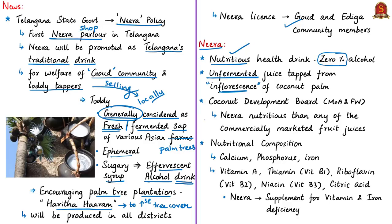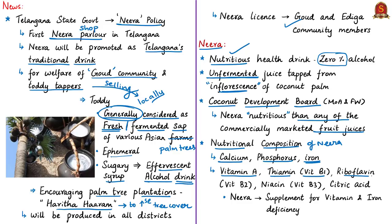According to the Coconut Development Board under the Ministry of Agriculture and Farmers Welfare, Neera is more nutritious than any of the commercially marketed fruit juices in India. It is a good source of minerals like calcium, phosphorus and iron, and is also vitamin-rich — containing Vitamin A, thiamine (B1), riboflavin (B2), niacin (B3) and citric acid. It is generally given as a supplement for iron and vitamin deficiency.